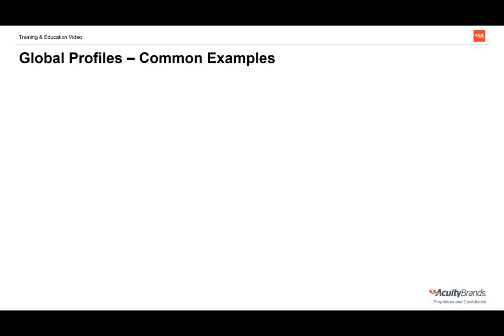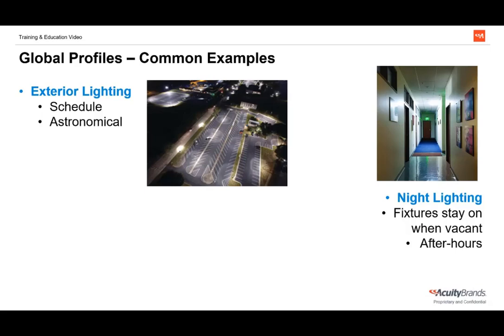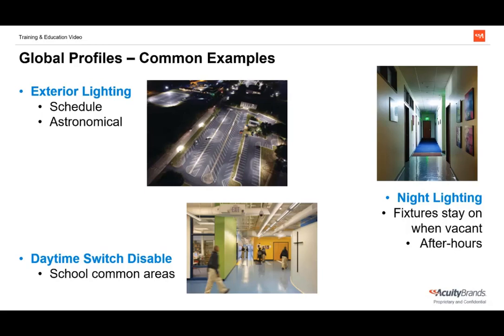Here are some common examples used in nLight control systems, sometimes required by code. Exterior lighting utilizes a time of day or astronomical schedule — sunrise and sunset — and location information is critical for accurate times. Night lighting, or egress, tells specific lights to remain on even when the area is vacant, usually only after hours. A daytime switch disable profile disables switches in common areas of schools or retail spaces during normal operating hours, preventing people from turning the lights off.